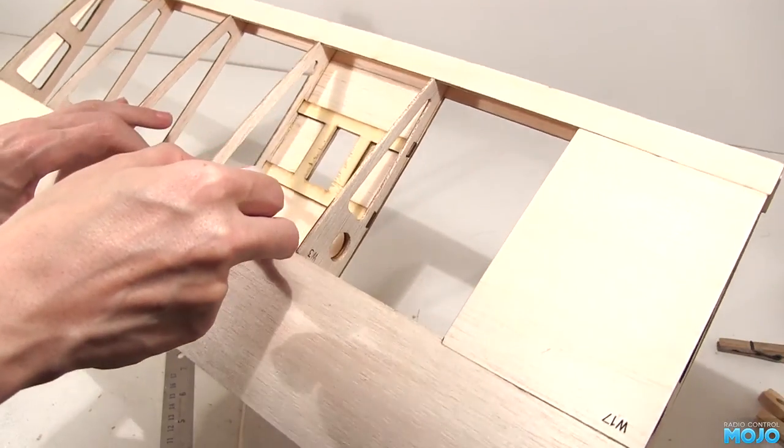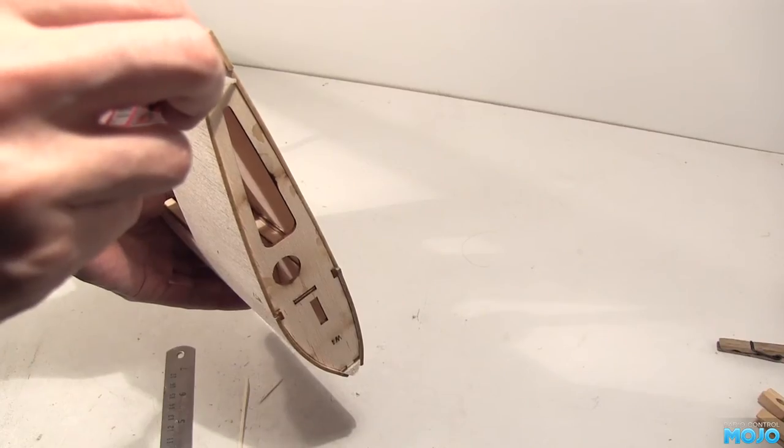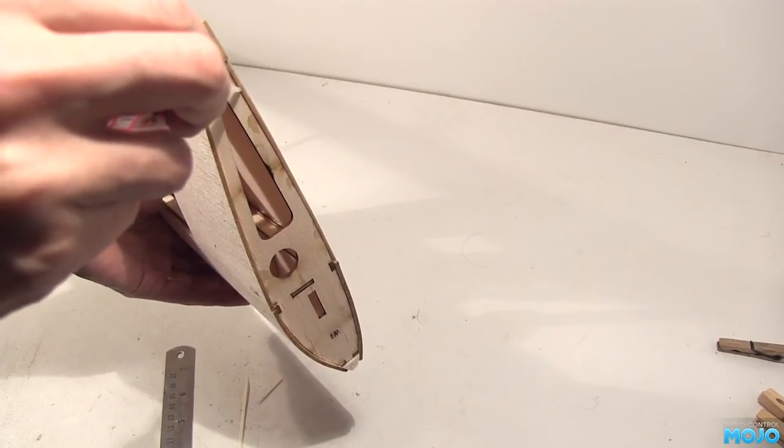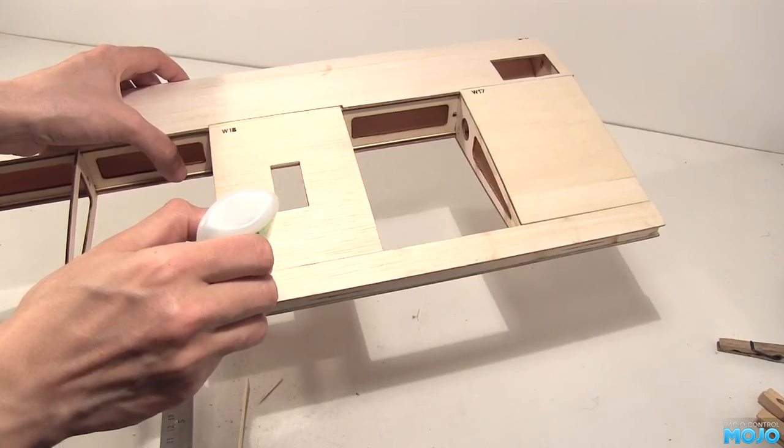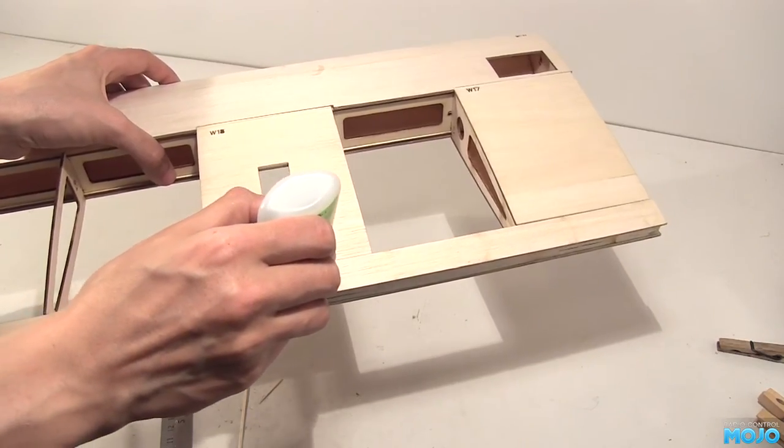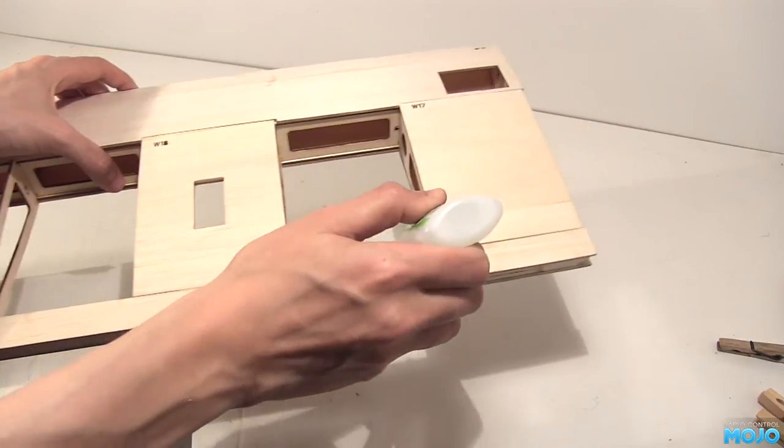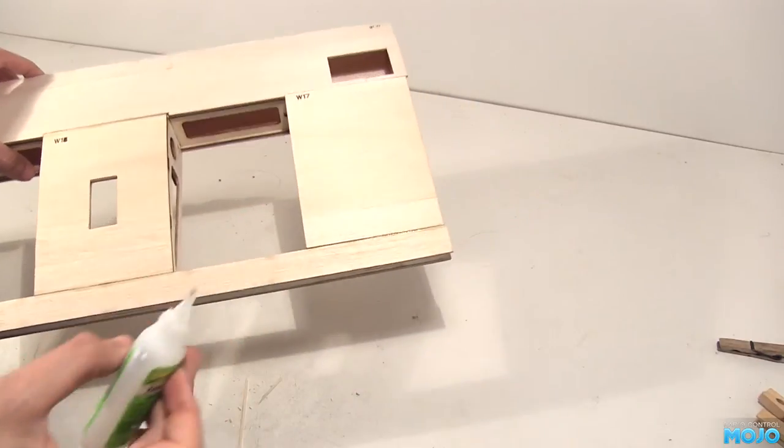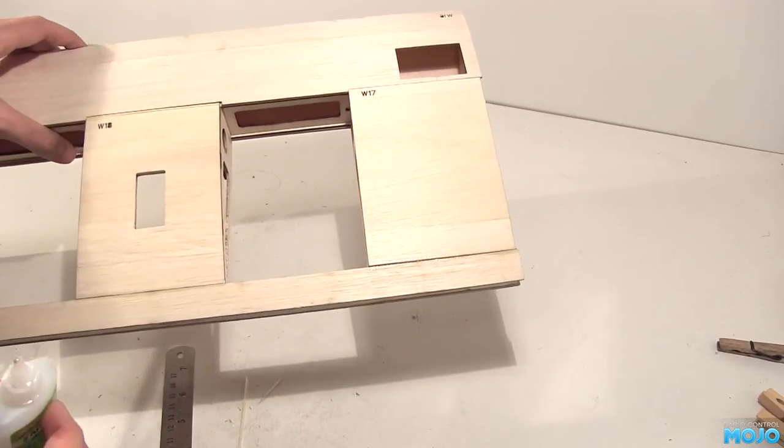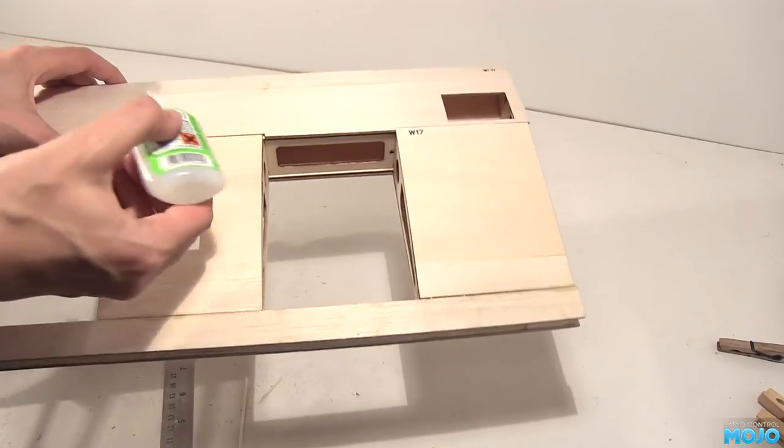While we have the CA out, we need to go around the wing and carefully check to see if anything hasn't properly stuck together. Also, make sure where all the sheets meet up that they are properly glued. Double check everything at this stage will give us a much stronger wing. This is where the ARTFs fall down. It's not uncommon for a model to have parts that simply aren't stuck together. Failing in flight. Not good.